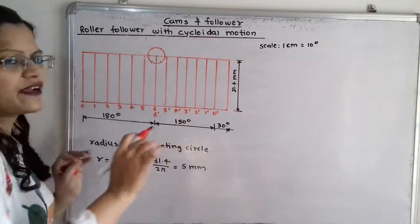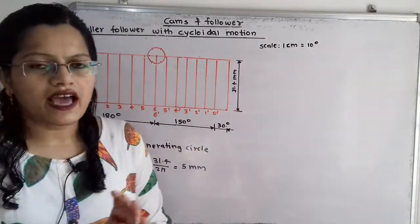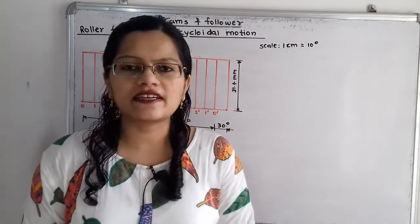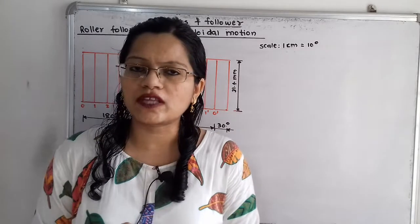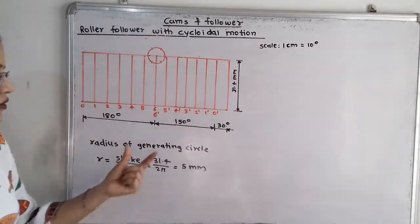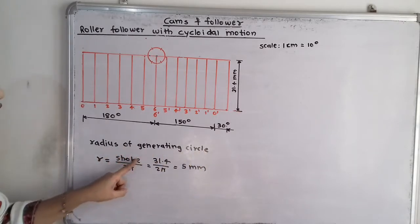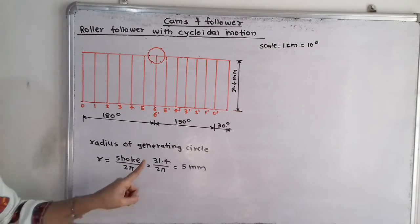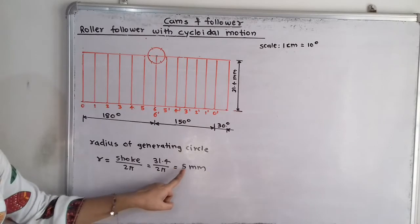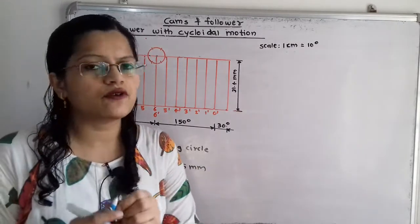The motion is cycloidal, so we need to draw a generating circle. The radius of the generating circle, small r, equals stroke divided by 2π. With stroke equal to 31.4 mm, small r = 31.4 / (2π) = 5 mm. So we set the compass to 5 mm.